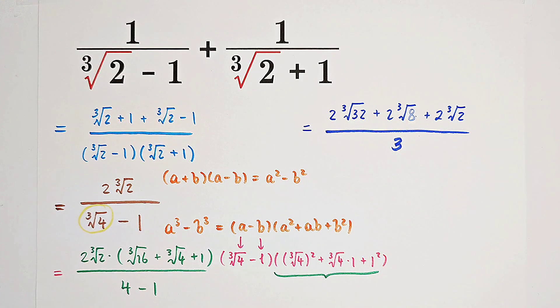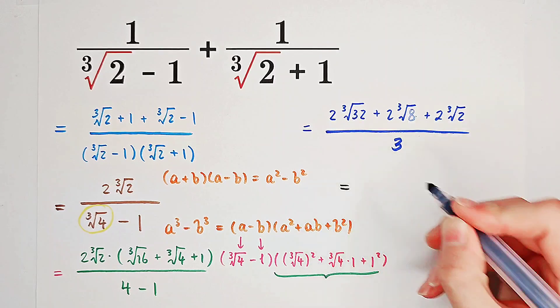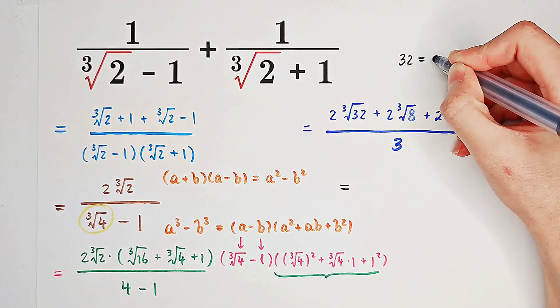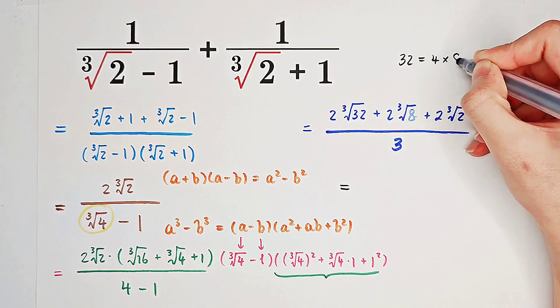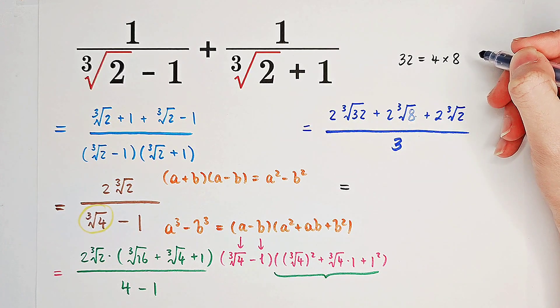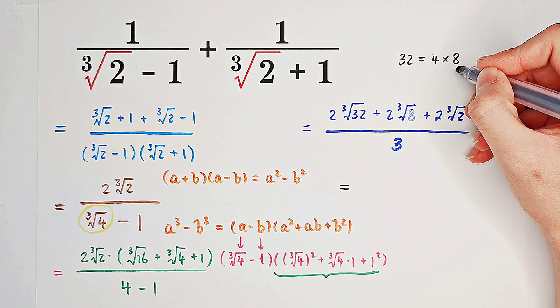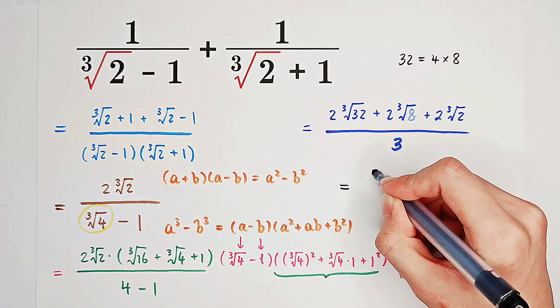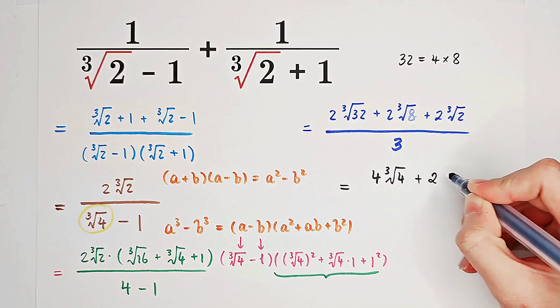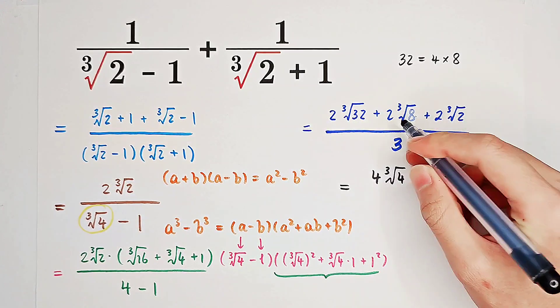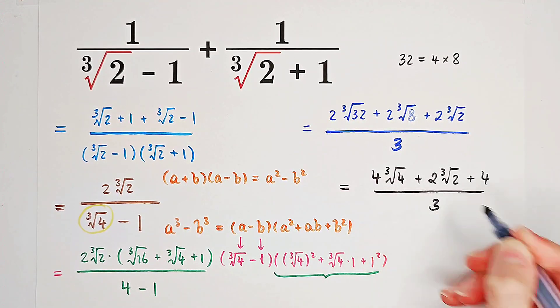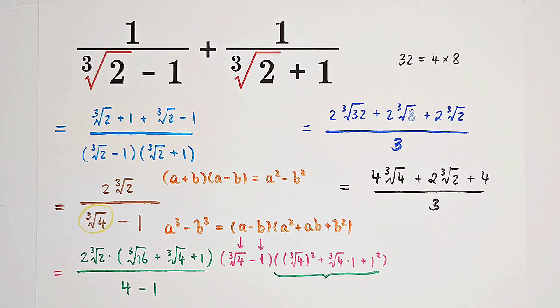And now, we should simplify this result. Look, 32 is 4 times 8. So, cube root of 32 is actually cube root of 4 times cube root of 8. And cube root of 8 is 2, so it is 4 cube root of 4, plus 2 times cube root of 2. Cube root of 8 is 2, so it is plus 4, over 3. And that is the final answer.